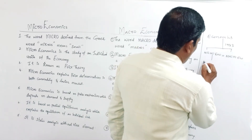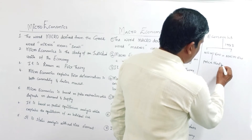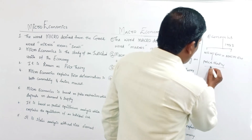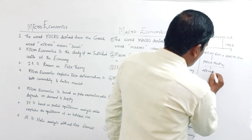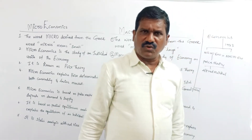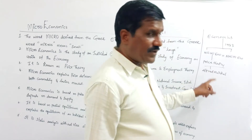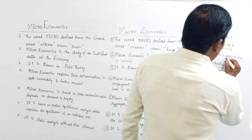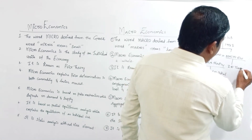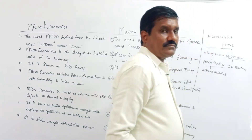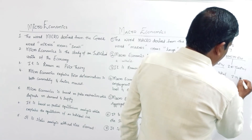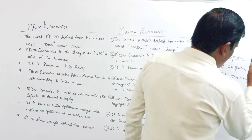Microeconomics is also known as price theory. It was developed by Alfred Marshall. Macroeconomics is also known as income and employment theory. It was developed by J.M. Keynes.